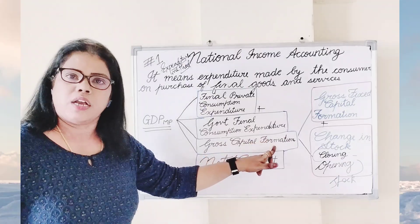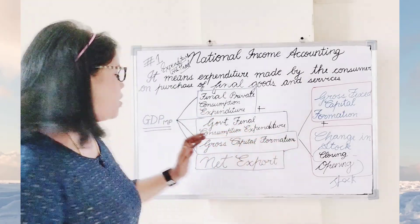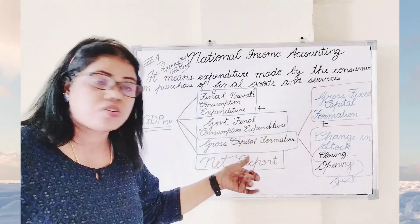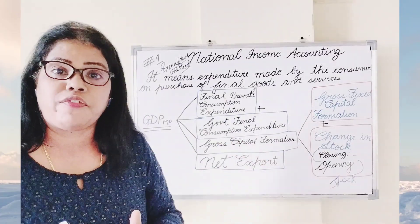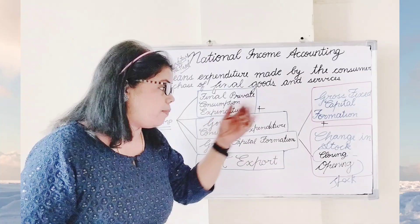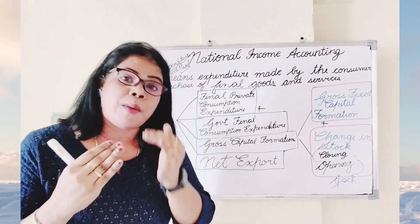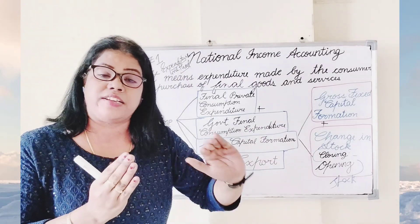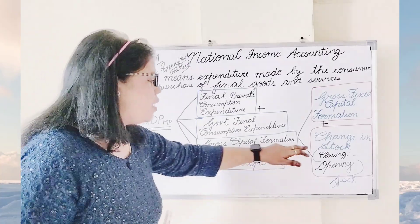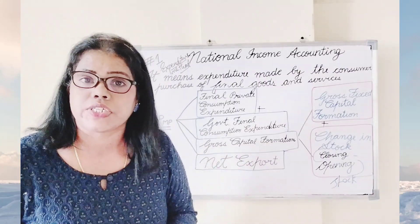Plus gross capital formation. For the production of final goods and services, whatever amount is invested by the producer is called gross capital formation. The two components behind gross capital formation are: gross fixed capital formation — meaning the fixed assets purchased by the producer — plus change in stock or inventory stock. Change in stock means closing stock minus opening stock, also called inventory stock.